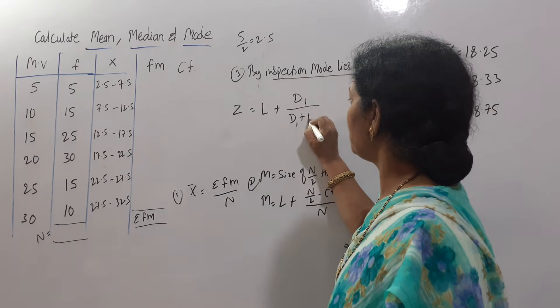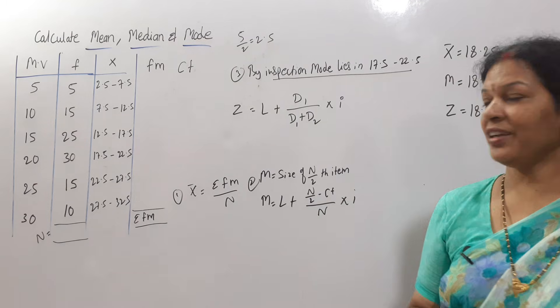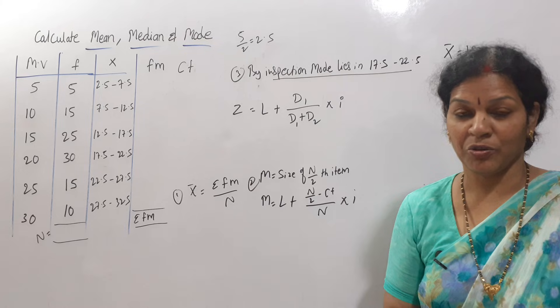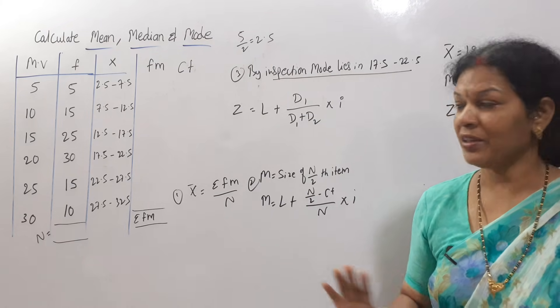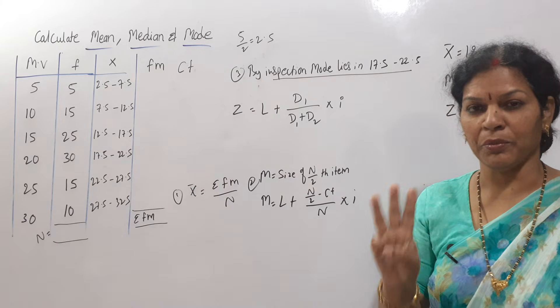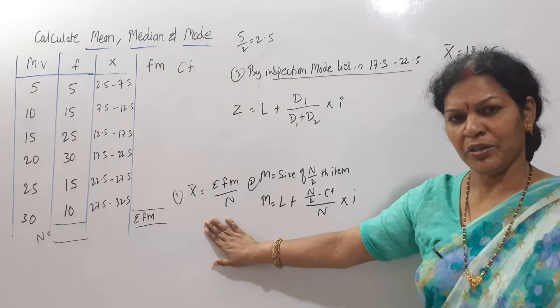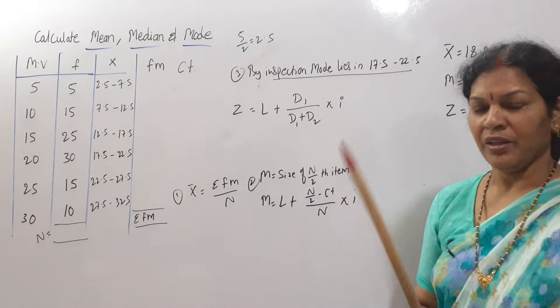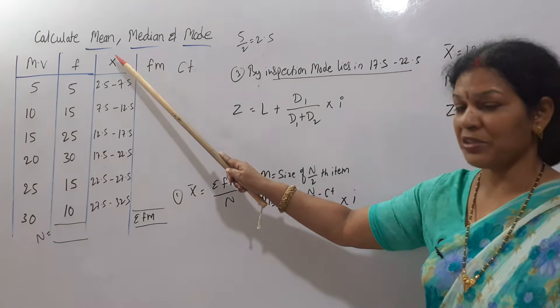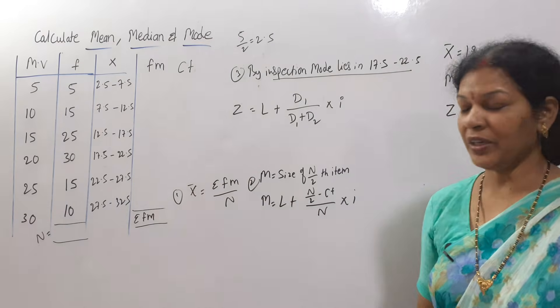Then after that write the formula. What is the formula? Mode formula is L plus d1 by d1 plus d2 into i. Apply this and you will get mode also. So this is your homework problem. I am not going to work out because we have done enough problems. Just in one glance I explained you how to prepare mean, median, mode. Do not get confused. First see the formula, recollect the formula, write it. According to the formula which column is required. As per this formula we need f m. f means calculate f m. Before going to the f m, first we found class interval x from the mid value.